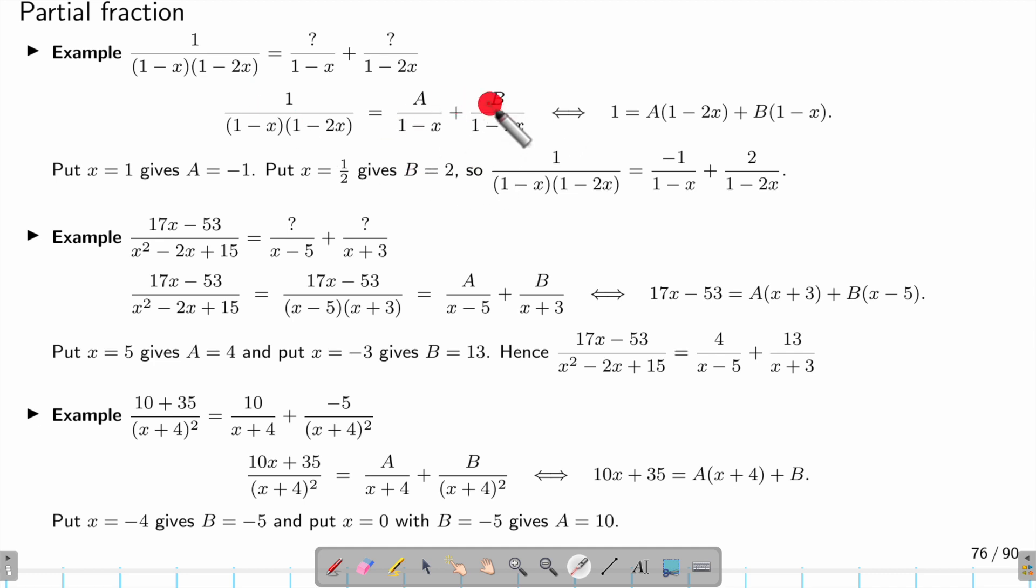What I'm going to do is multiply the whole thing by the expression here. If this term is multiplied by this expression, it gives me 1. If I multiply with this expression (1-x)(1-2x), you see (1-x) and (1-x) cancel out, so I only have (1-2x) times A left.